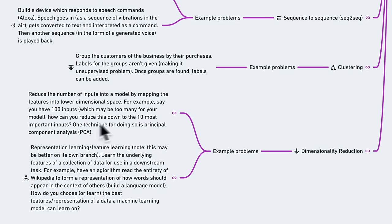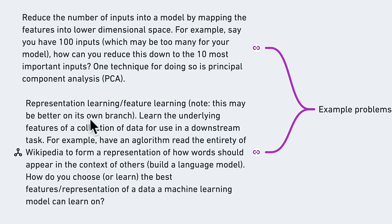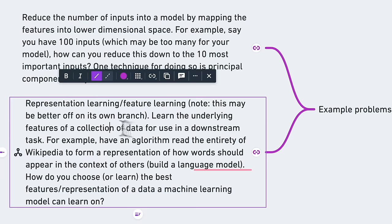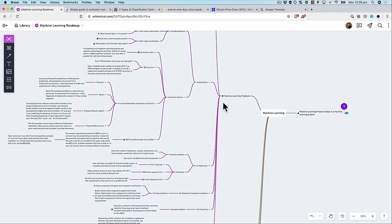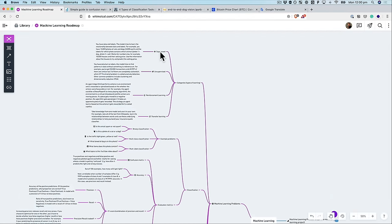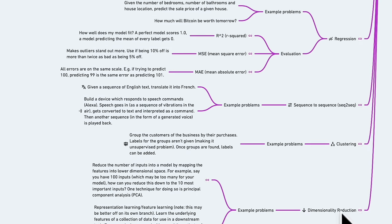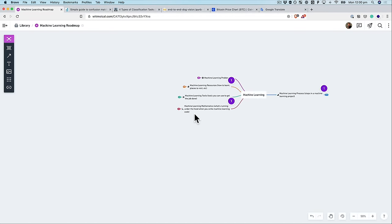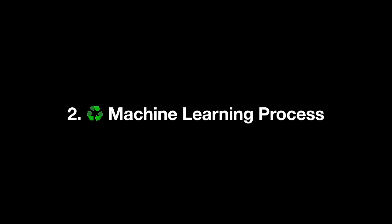We've also got clustering and dimensionality reduction. Common dimensionality reduction techniques include PCA and representation learning (also called feature learning). So in summary for machine learning problems: supervised learning, unsupervised learning, reinforcement learning, transfer learning, classification, regression, sequence to sequence, clustering, and dimensionality reduction. That's branch one done.